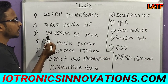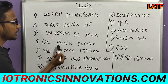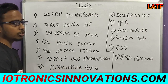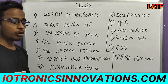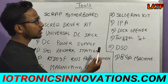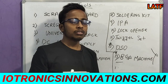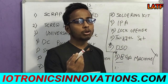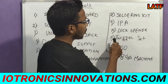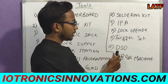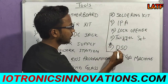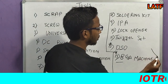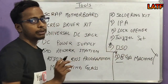You will also need a screwdriver kit, universal DC jack, DC power supply, SMD rework station, RT809F BIOS programmer (or CH340G BIOS programmer), magnifying glass, soldering kit (soldering iron, flux, solder), BGA paste for reballing ICs, IPA, lock opener, and tweezers. DSO and BGA machine are optional. But these 11 tools are compulsory.